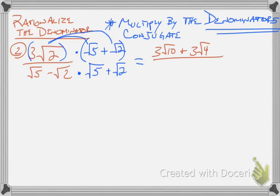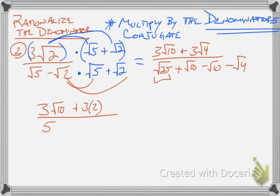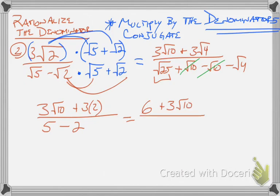When I do the denominator, square root of 5 times square root of 5 becomes square root of 25. Square root of 5 times square root of 2 is square root of 10. Negative square root of 2 times square root of 5 is negative square root of 10. And negative square root of 2 times positive square root of 2 becomes negative square root of 4. Simplifying: square root of 4 becomes 2. So I get 3 square root of 10 plus 3 times 2, over square root of 25 is 5. The two square root of 10 terms cancel out, and then minus square root of 4, which is 2. Write it in standard form — rational part first — so I have 6 plus 3 square root of 10 over 5 minus 2, which is 3.